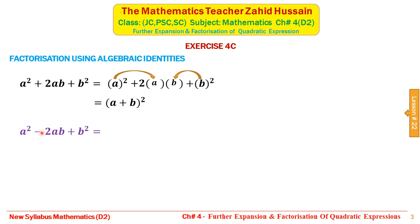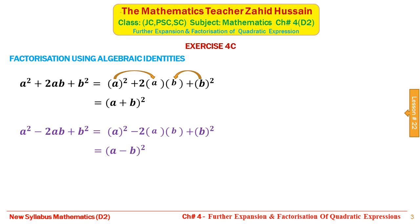Similarly, for the second type of expression the only difference is the sign — there is a minus sign with the 2ab term. This will be written as: first term as a perfect square, minus 2 with two empty brackets, plus the square of the second term. In the first bracket we write the term under the first square, in the second bracket the term under the second square, and this gives the expansion of (a − b)², so these are the factors.